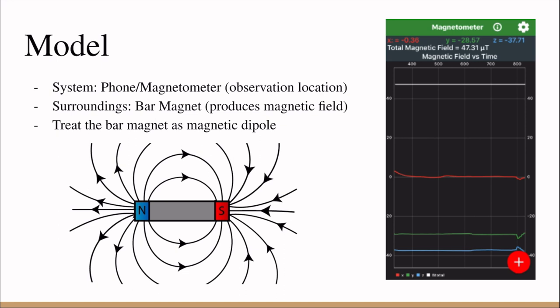In the picture on the bottom left, we know that the dipole moment points from south to north, and the picture on the right shows the magnetometer app on your phone.